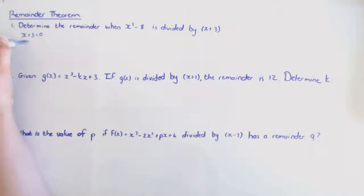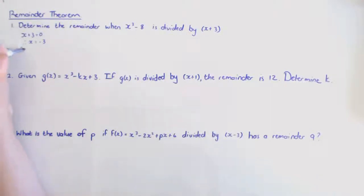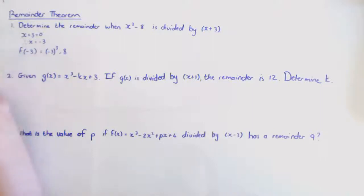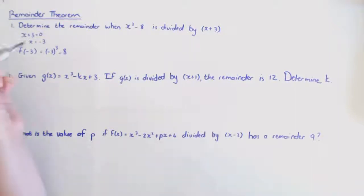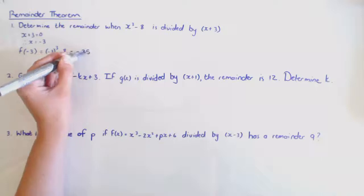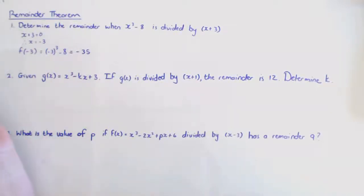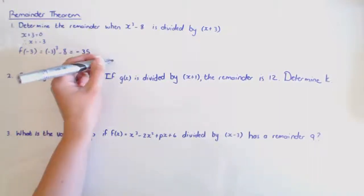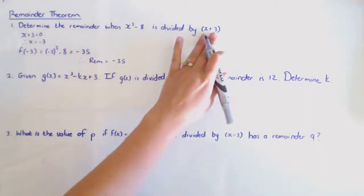For the first example, I take x plus three, make that zero, which gives x equals negative three. I substitute negative three into my equation: x cubed minus eight becomes negative three cubed minus eight, which is negative 27 minus eight, giving a remainder of negative 35.